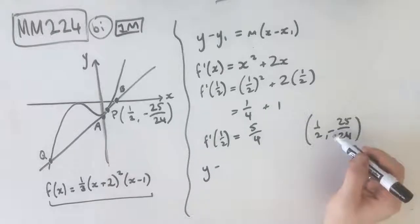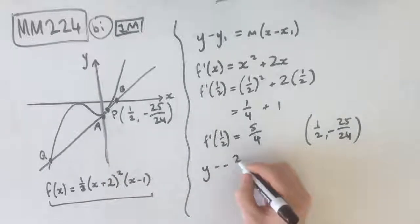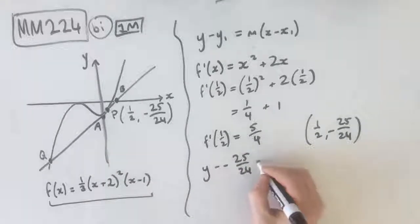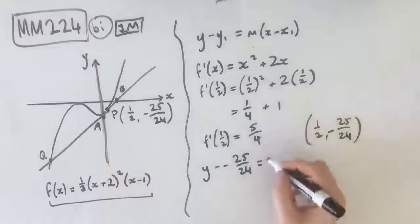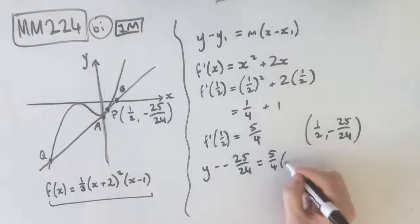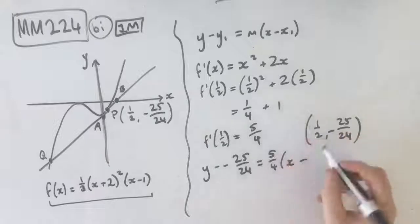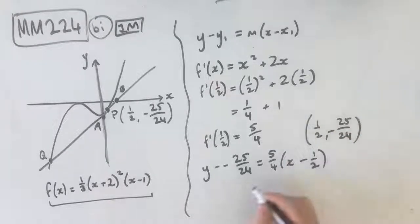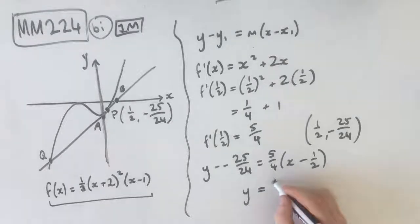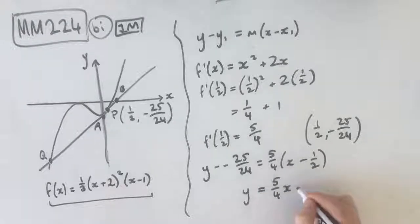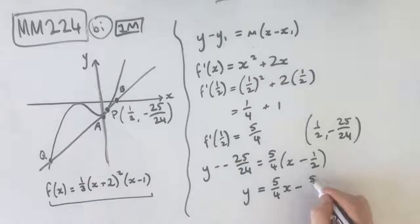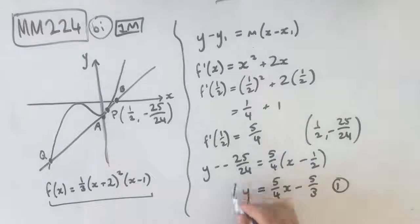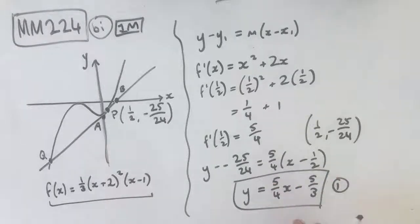Which means we can sub it in here. And we also know this occurs at the point (1/2, -25/24). Which means our y value is -25/24, so that goes here. And that equals m, which is 5/4, times x minus our x value, which is 1/2. Now, expanding all this out and collecting like terms, we end up getting y = 5/4x - 5/3. That's our first and only mark. That's our final answer, guys.